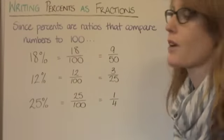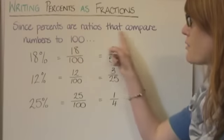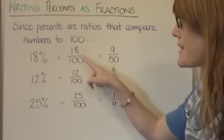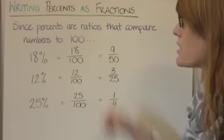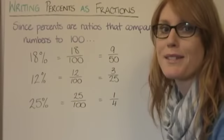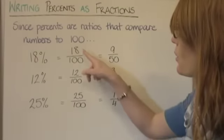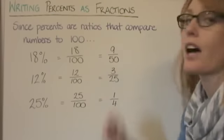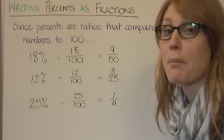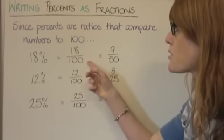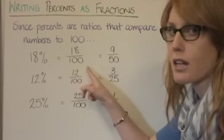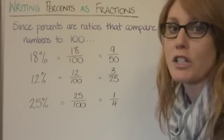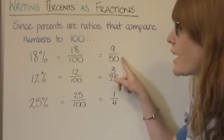Writing percents as fractions: since percents are ratios that compare numbers to 100, 18% compares 18 to 100. When dealing with fractions, we always need to simplify by finding the greatest common factor between the numerator and denominator, then dividing both by that factor. In this case it's 2: 18 divided by 2 is 9, and 100 divided by 2 is 50. So 18% written as a fraction in its simplest form is 9 over 50.